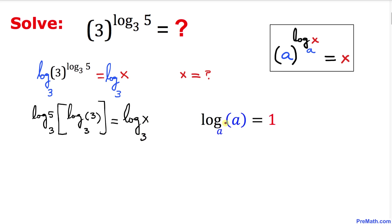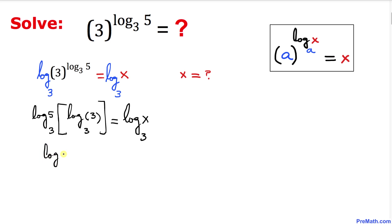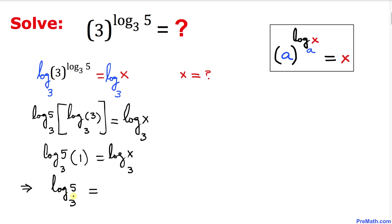Now let's apply the identity rule: as long as the base and the argument are the same, that equals 1. We can see our base and argument are the same, so log of 3 with base 3 equals 1. That means we have log of 5 with base 3 times 1, equal to log of x with base 3.